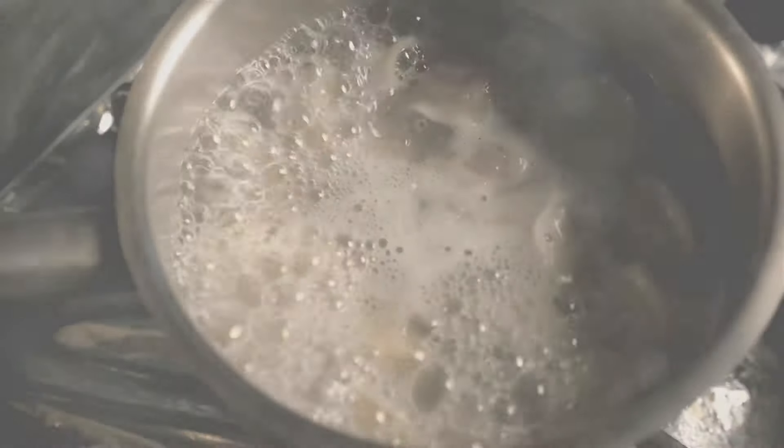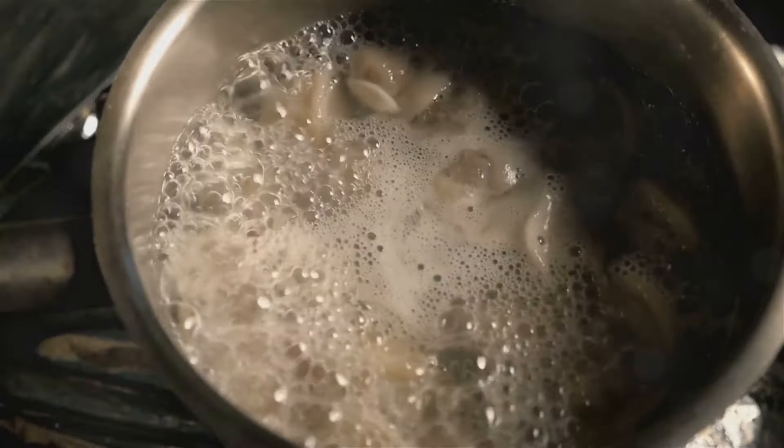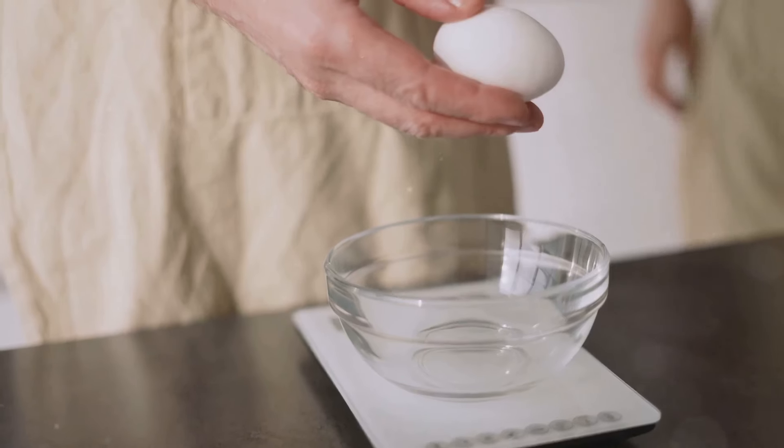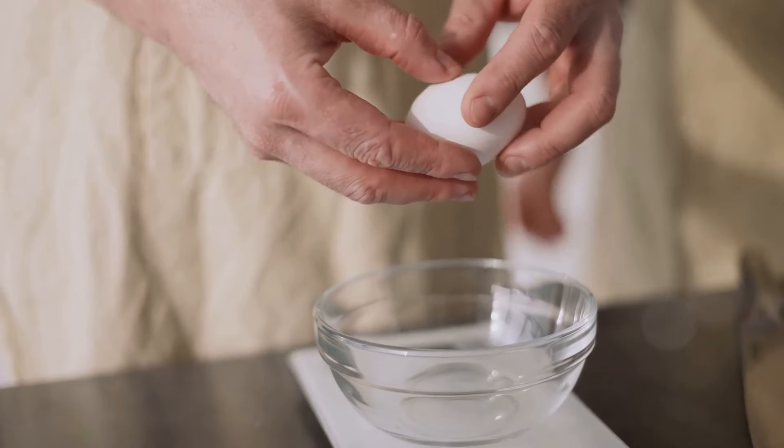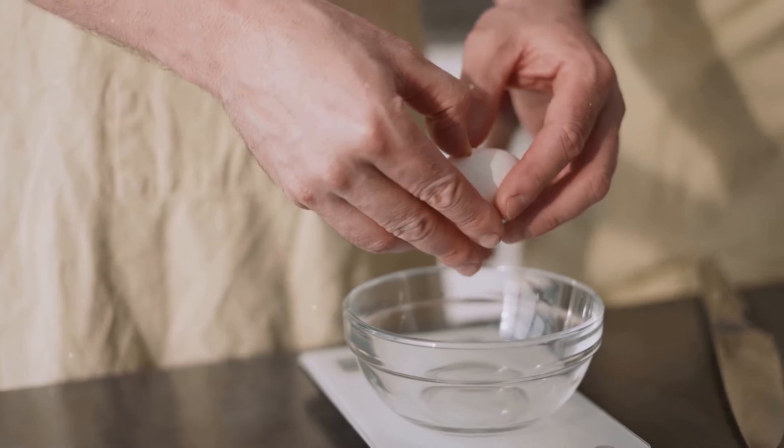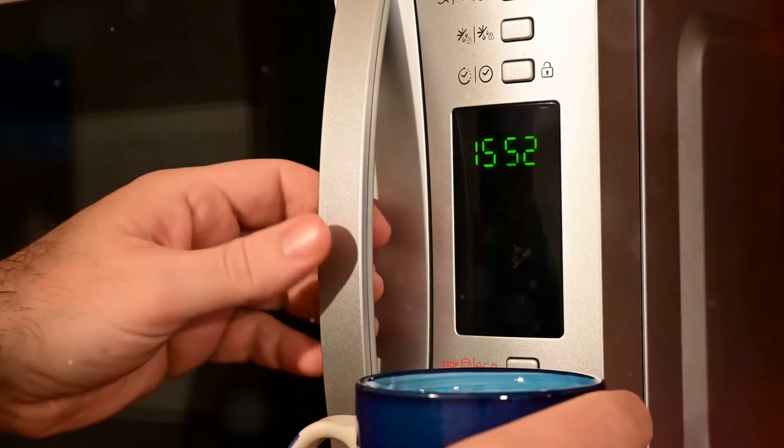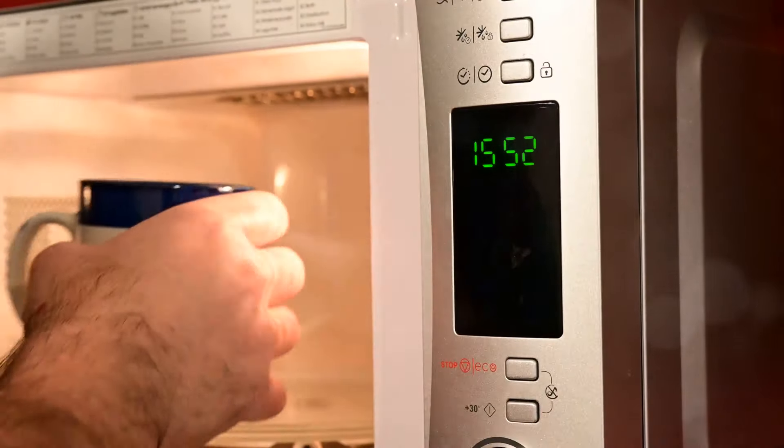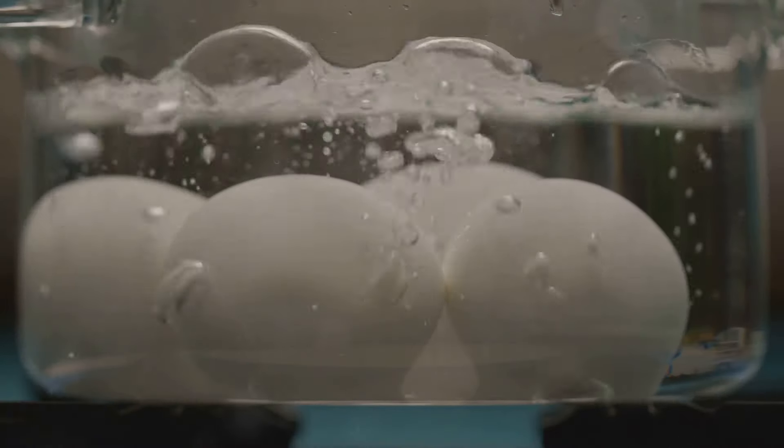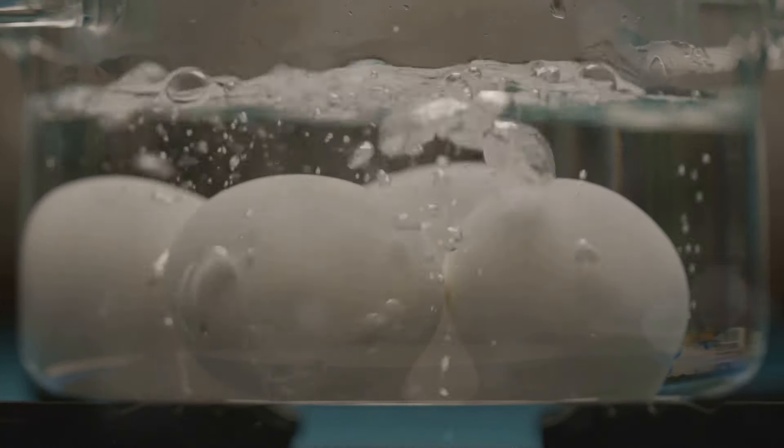Let's dive into the steps for boiling eggs perfectly. First, choose the right eggs. Fresh eggs are great, but slightly older eggs, about a week old, peel more easily. Next, prepare the water. Always start with cold water to ensure even cooking. Then monitor the time. Use a timer to ensure you don't overcook or undercook your eggs. And finally, cool quickly. Once the eggs are done, place them in an ice bath to stop the cooking process and make peeling easier.